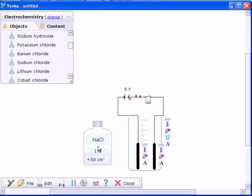For each electrolyte you can set the concentration and volume precisely by clicking on the label and typing a new value.